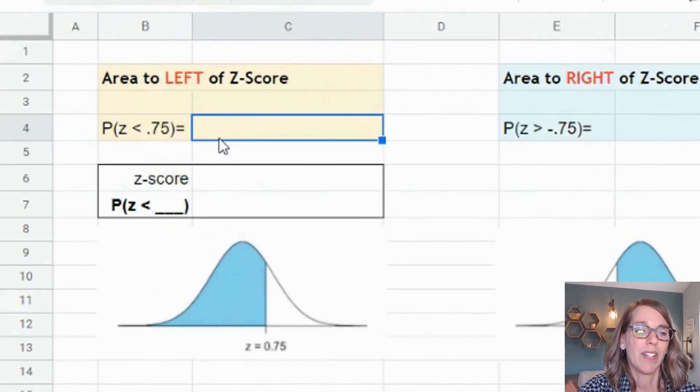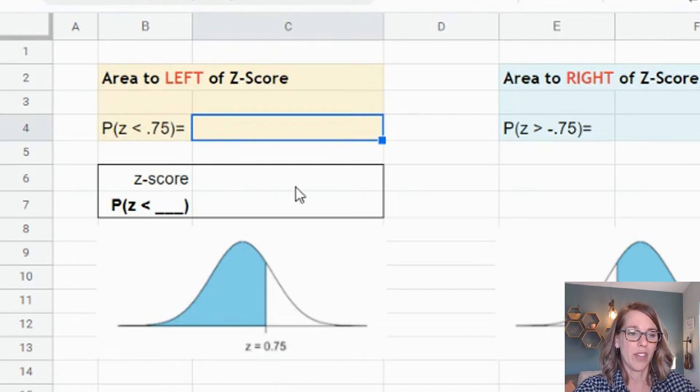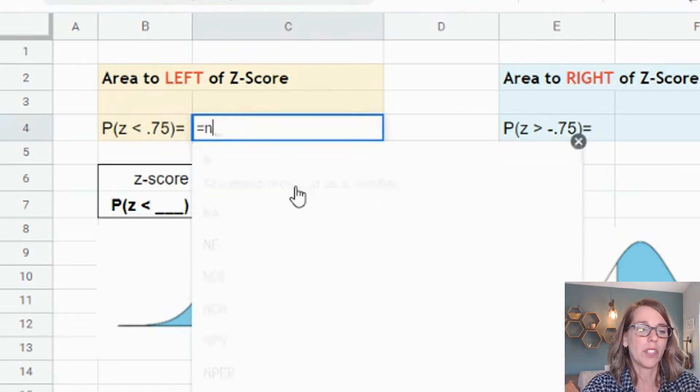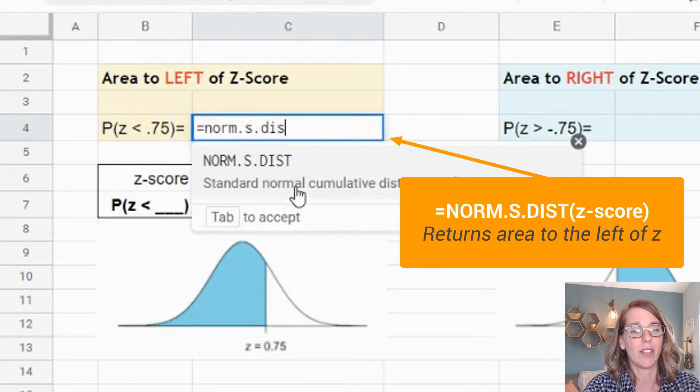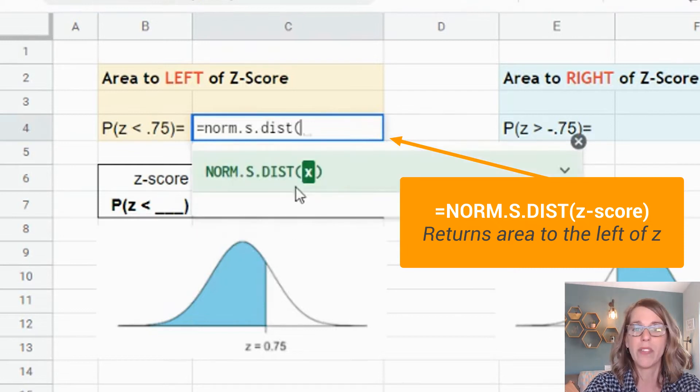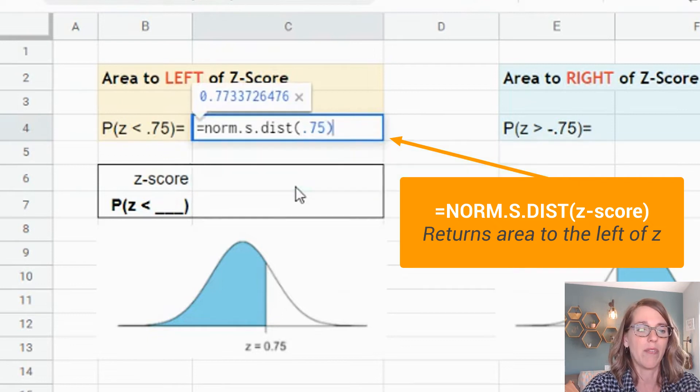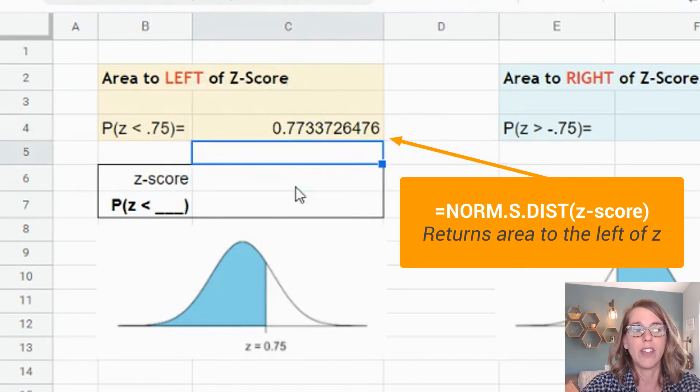Starting with this example, I'm going to look for the area to the left of z-score 0.75. To call this function, I type equals into the cell where I want the number. Then I want NORM.S for standard normal .DIST. So that standard normal distribution, parenthesis, I want it to the left of 0.75, and then I hit enter.